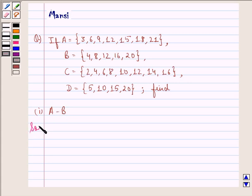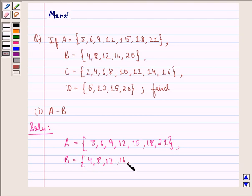Let us see the solution. It's given to us that A equals the set 3, 6, 9, 12, 15, 18 and 21. B equals the set 4, 8, 12, 16, 20.